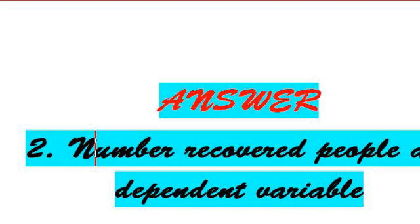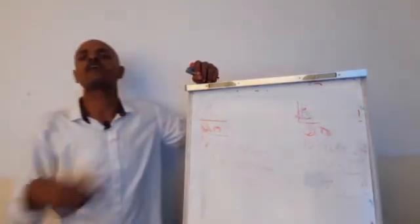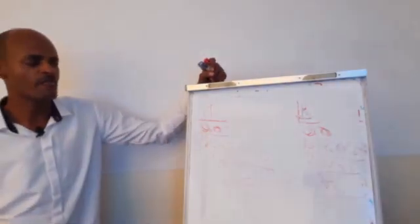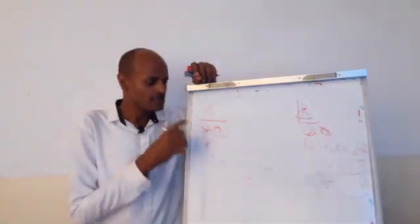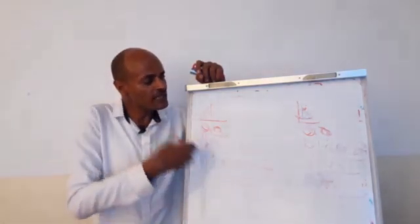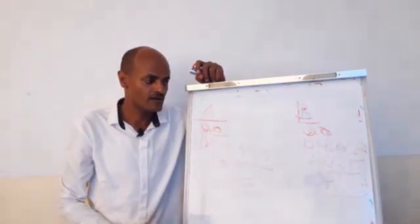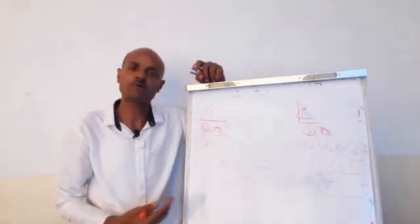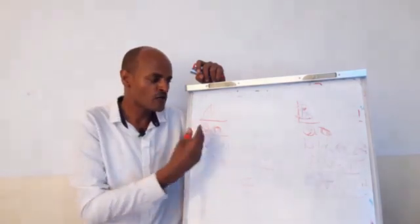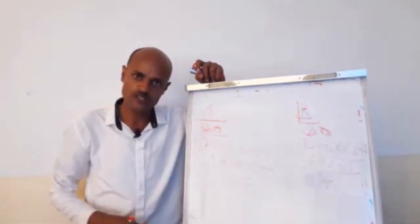What is the controlled variable? The controlled variables include the number of weeks and the number of people in each group.